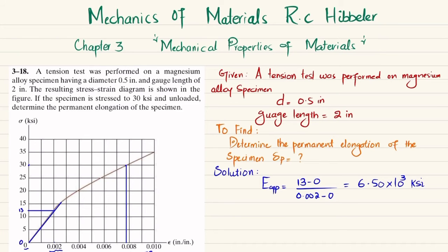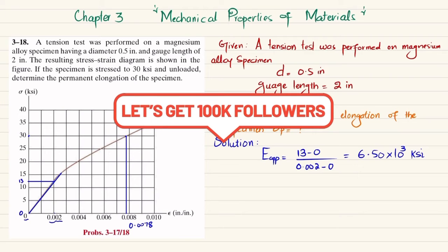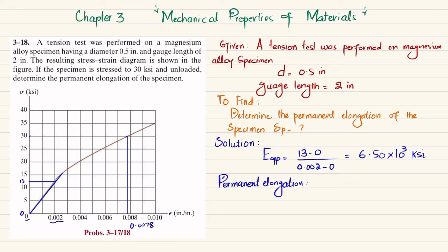After it is unloaded it comes back, but it will not come to its original position and it will have a certain strain. So how will you find that strain? That is what we call permanent elongation.